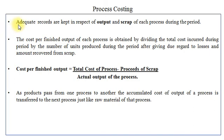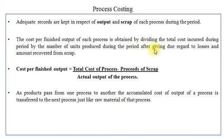During the process, adequate records are kept in respect of output and scrap of each process during the period. The cost per finished output of each process is obtained by dividing the total cost incurred during the period by the number of units produced, after giving due regard to losses and amount recovered from scrap. The formula is: Cost per finished output = (Total cost of process − Proceeds of scrap) ÷ Actual output of the process.